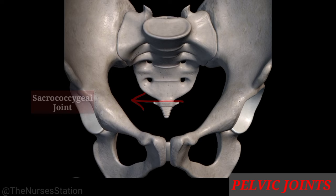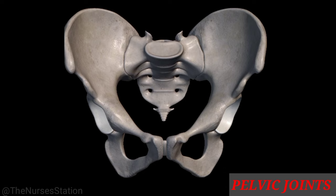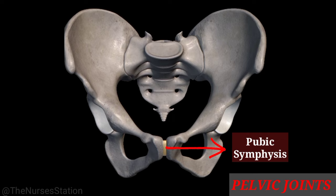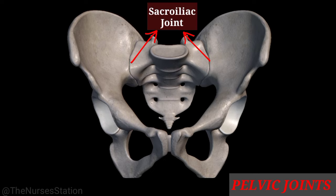The pelvic joints: first, the sacrococcygeal joint — the joint between the fifth sacral and the first coccygeal segments — allows flexion and extension of the coccyx, occurring passively during childbirth and defecation. Second, the pubic symphysis is a secondary cartilaginous joint between the medial surfaces of the pubic bones; usually no movement occurs except in pregnancy, when the ligaments and cartilage soften, allowing increased pelvic diameters during labor. Third is the sacroiliac joint.